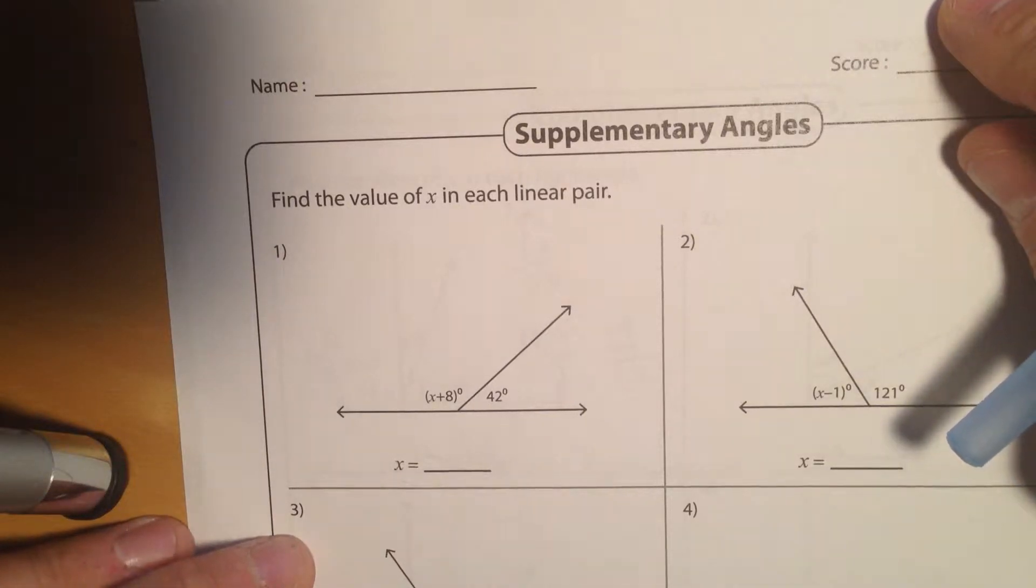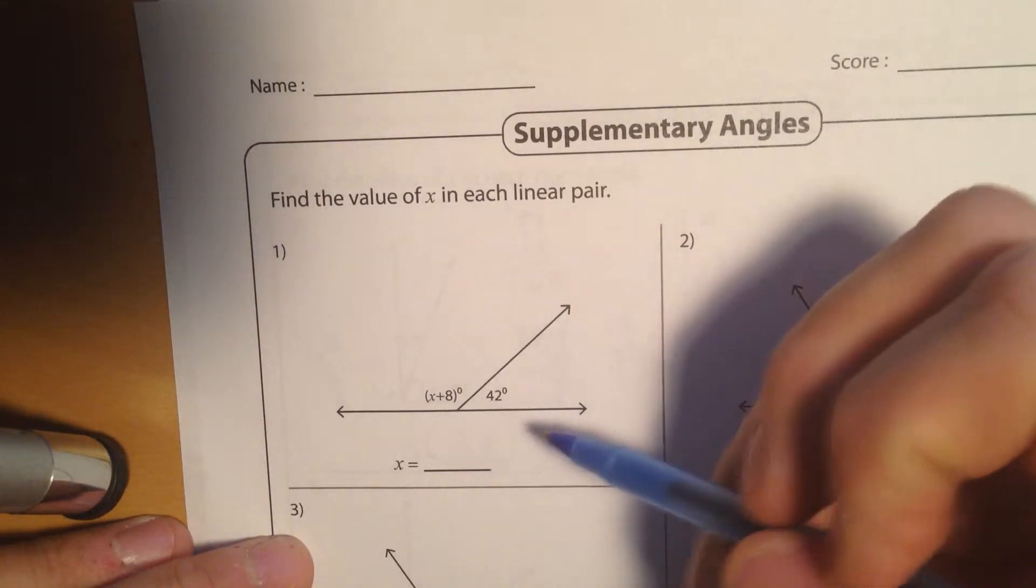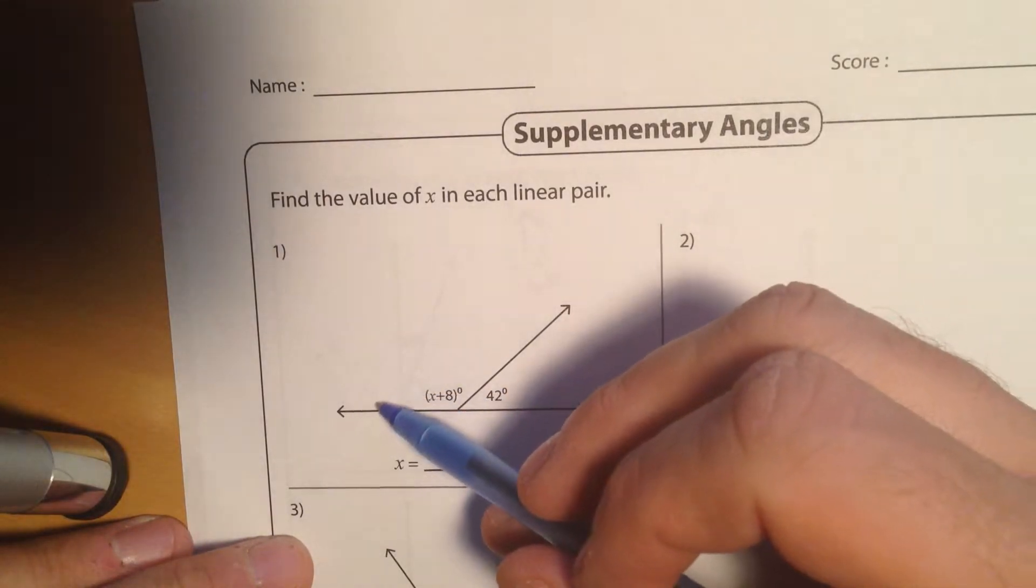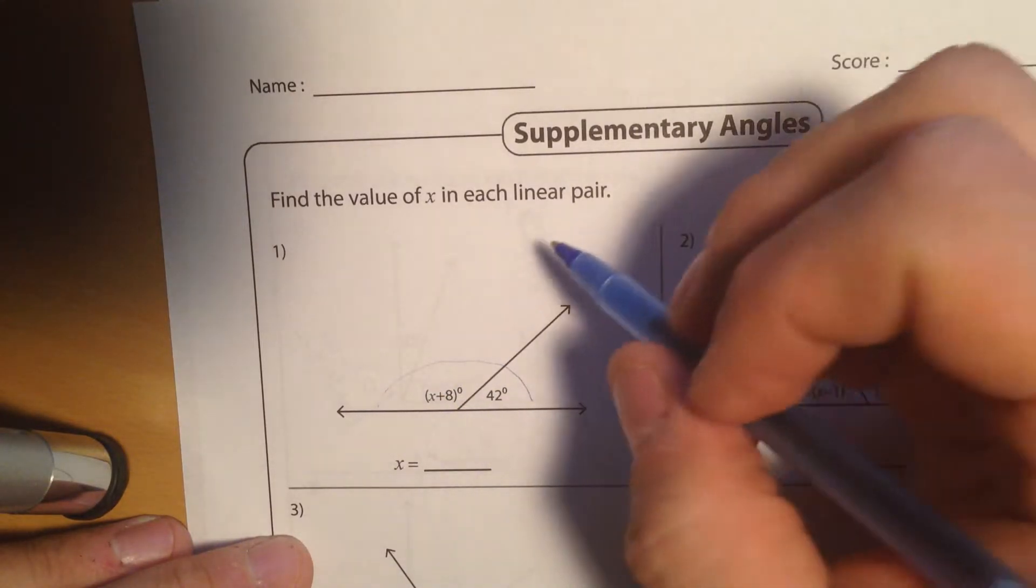Okay, today we are working with supplementary angles, and like we did yesterday, using equations to solve this. We know that this entire angle, the straight angle here, is 180 degrees.